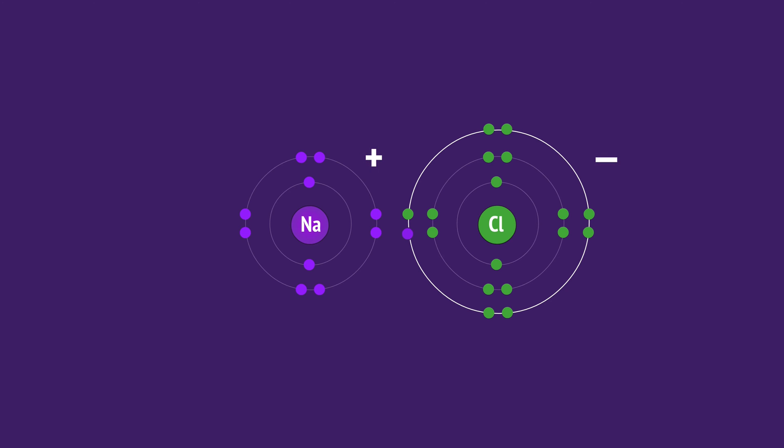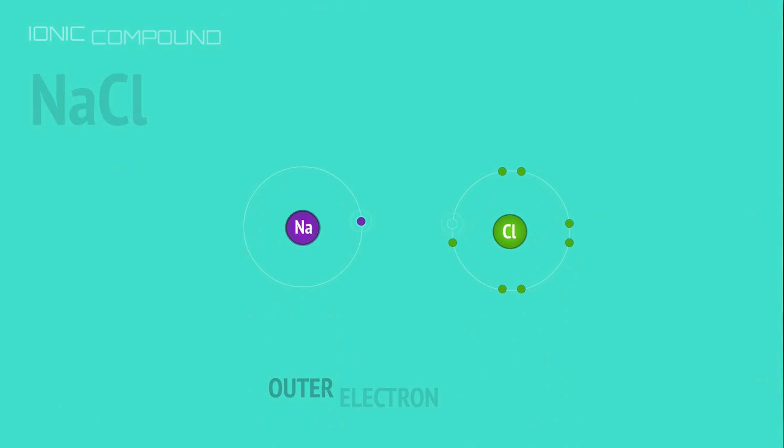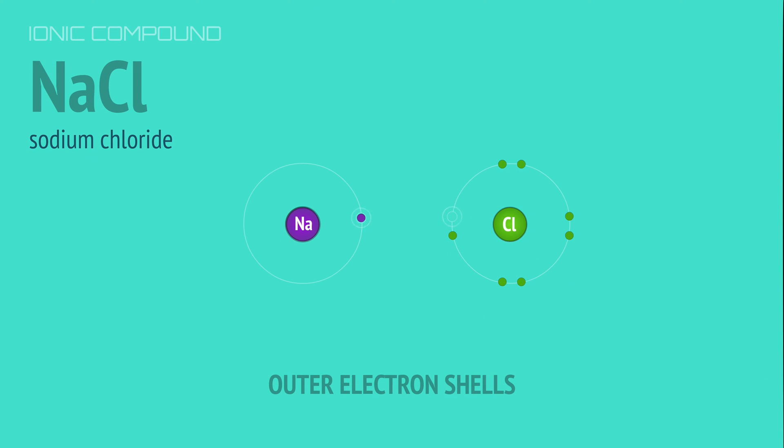We can simplify this diagram to show just the valence electrons, because they're the only electrons involved in chemical bonding.